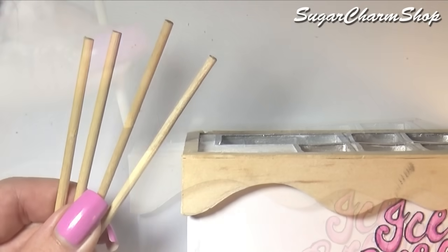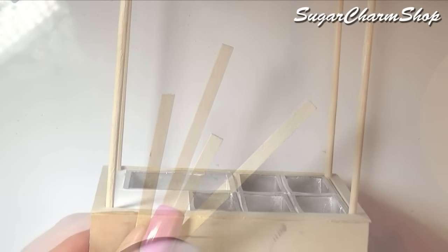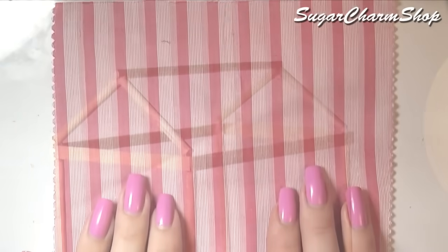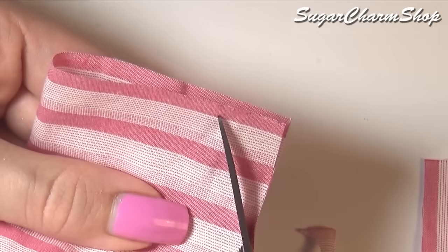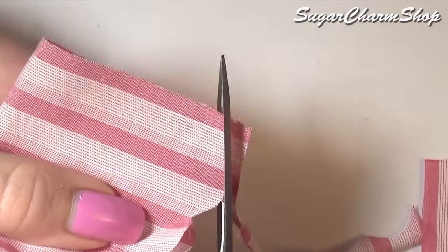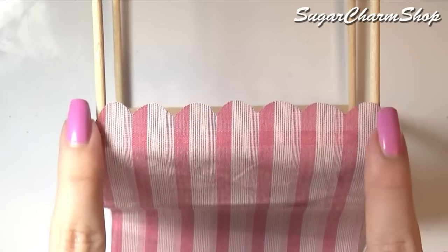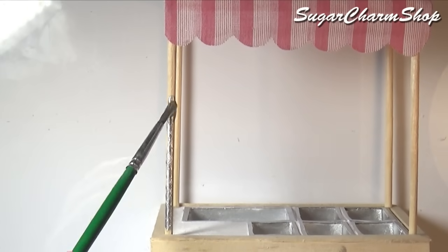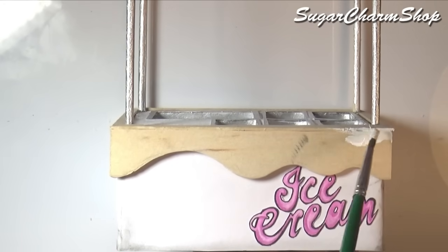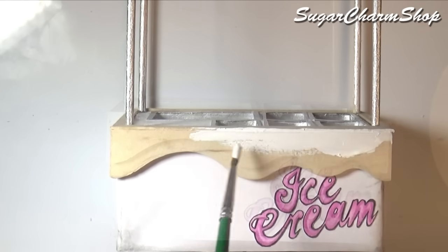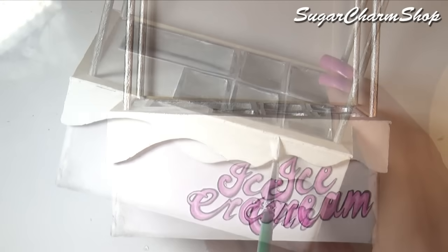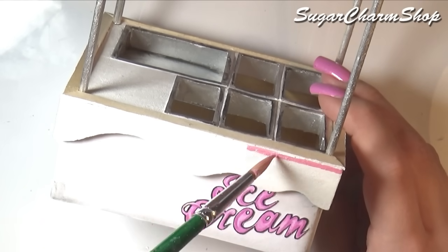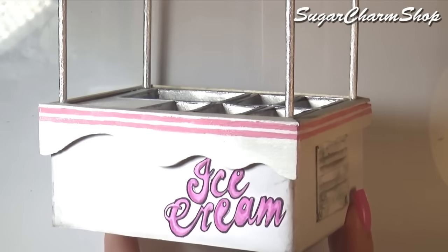I glued a wooden skewer onto each corner. And then used some more as well as some more of the coffee stirring sticks to make the rest of the construction. Cut and add some fabric on top. And then paint on a few more details.